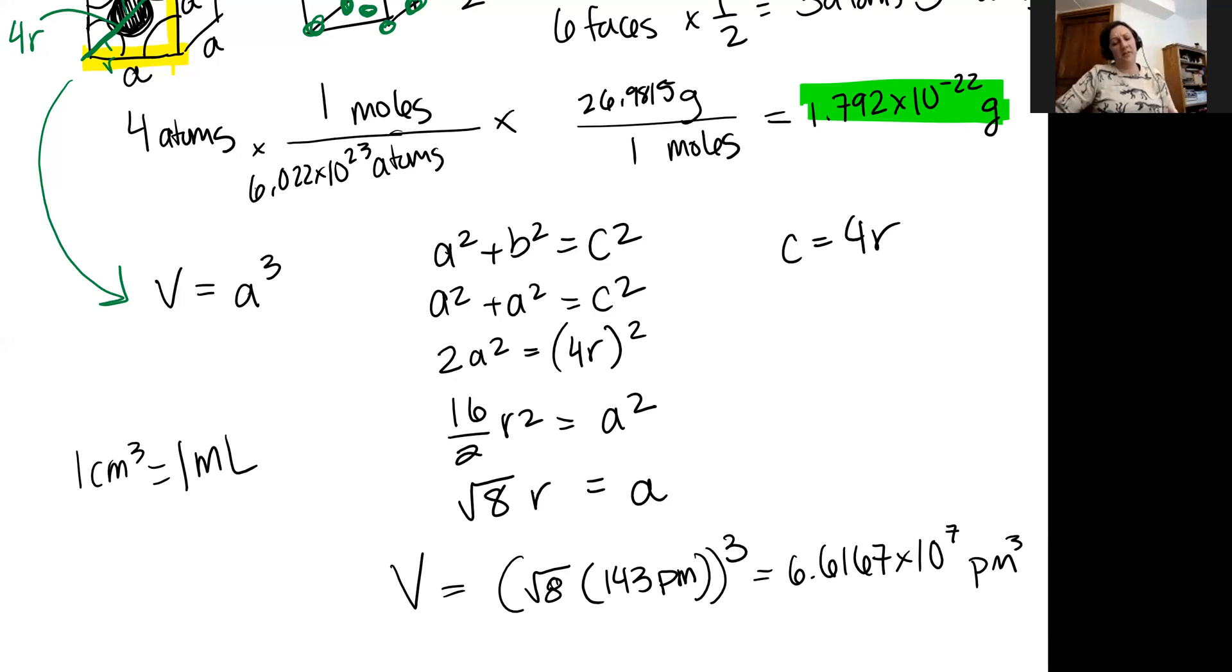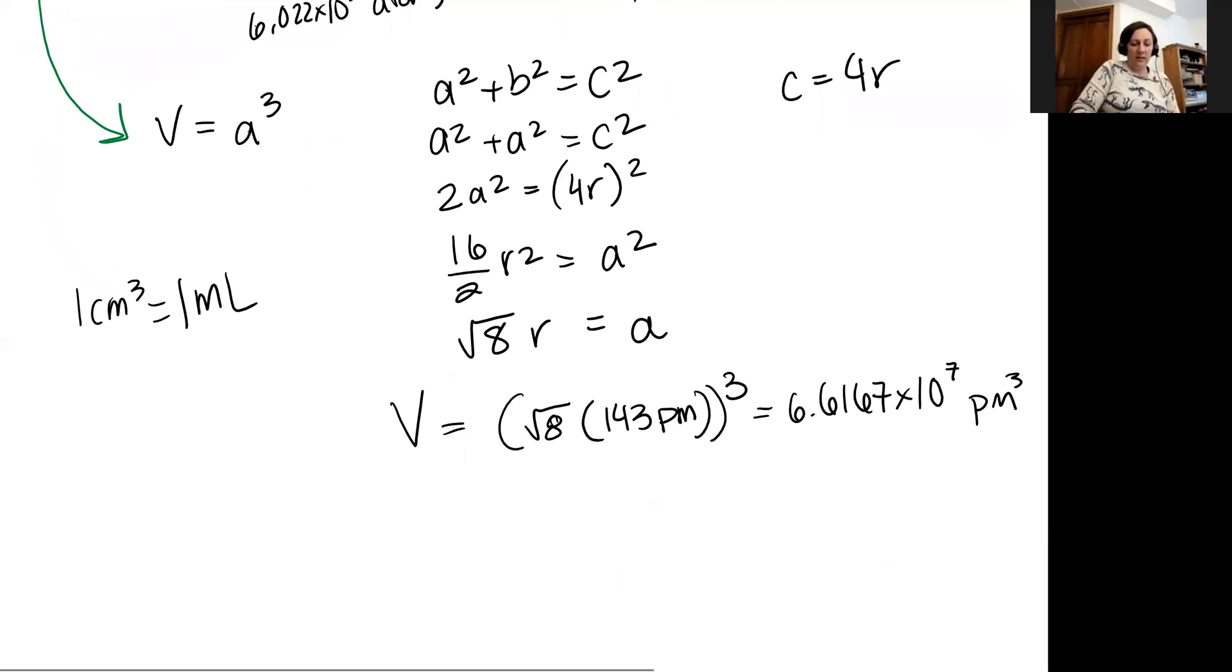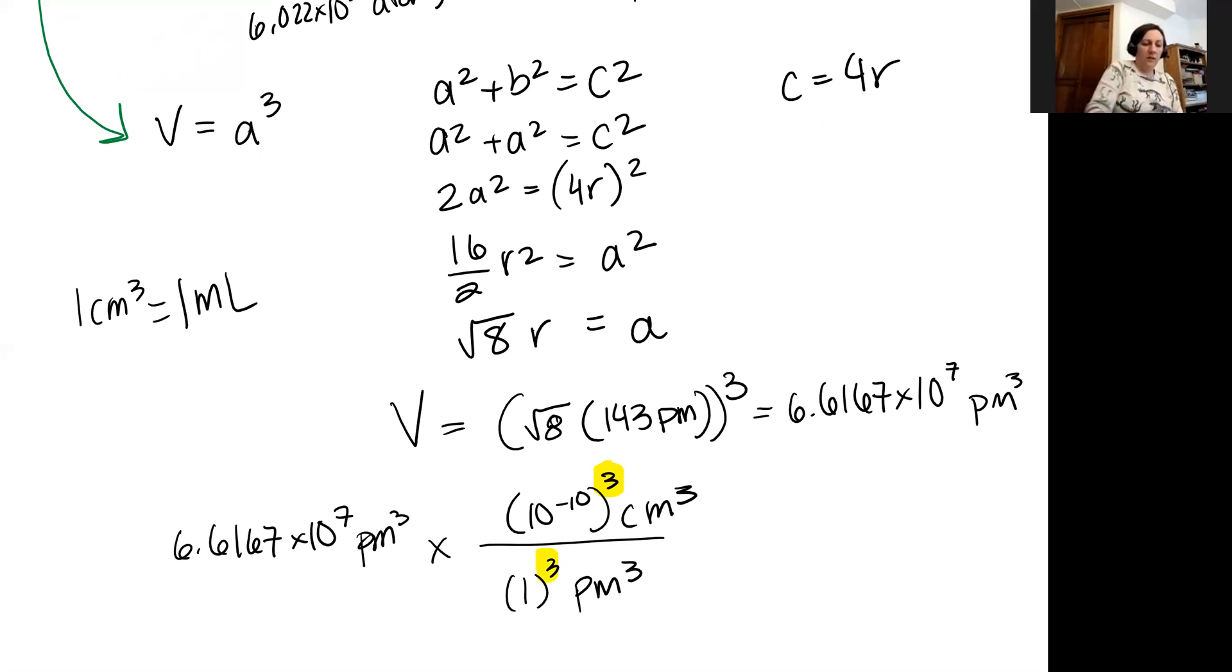So I'm going to start with my 6.6167 times 10 to the 7th picometers cubed. And I need a conversion factor that will go from picometers to centimeters. Well, one picometer cubed is going to be equal to 10 to the negative 10 centimeters cubed. And it's really important to remember to cube here, because we know that one picometer is equal to 10 to the negative 10 centimeters. So one picometer cubed is equal to 10 to the negative 10 cubed centimeters cubed. That's because this is cubed.